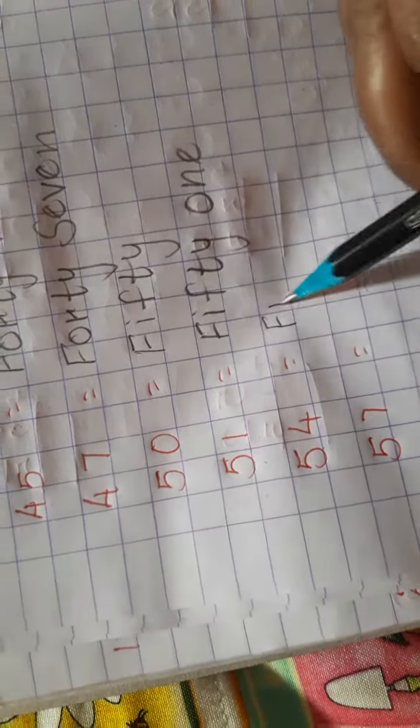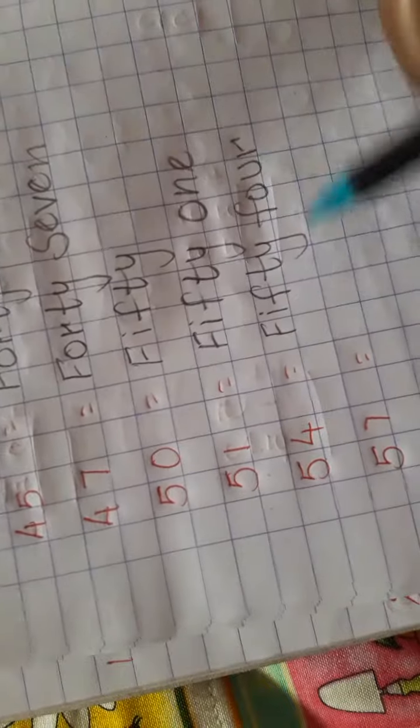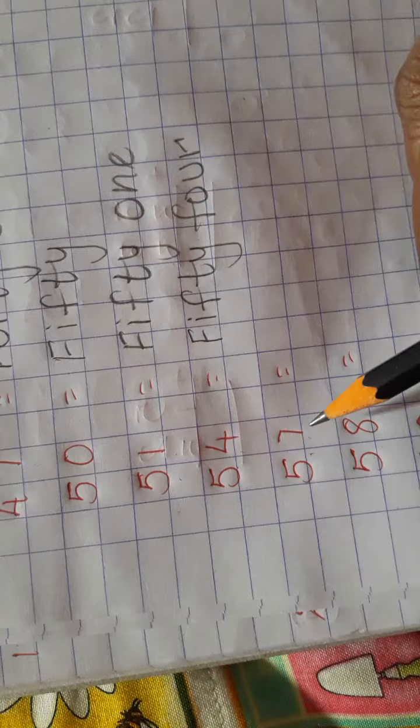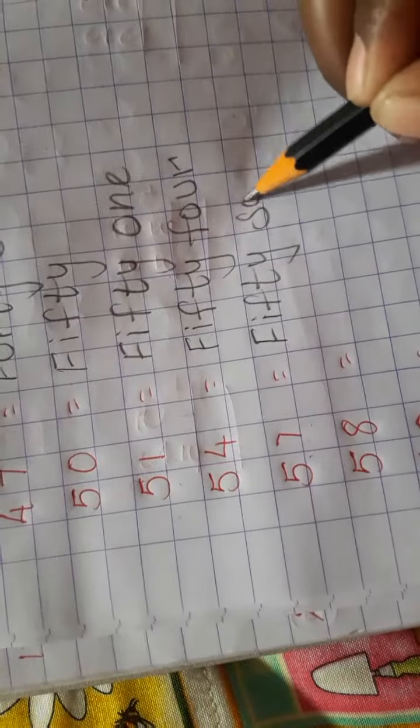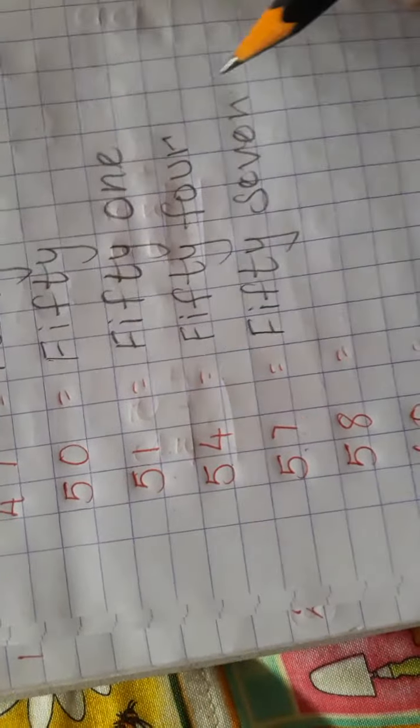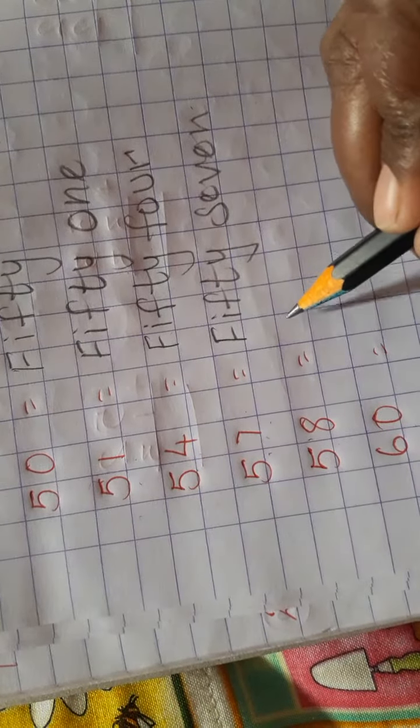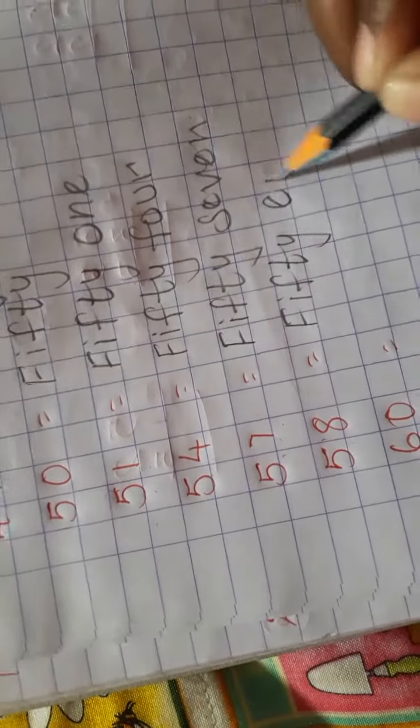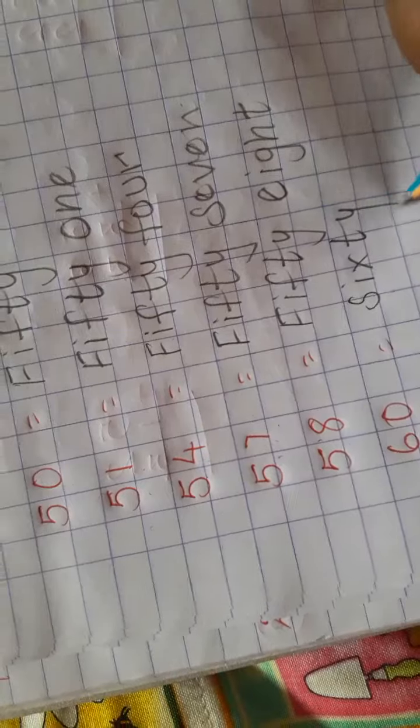F-I-F-T-Y, 50, F-O-U-R, 4. 54. Next number is 57: F-I-F-T-Y, 50. Next number, F-I-F-T-Y, 50, E-I-G-H-T, 8. S-I-X-T-Y, 60.